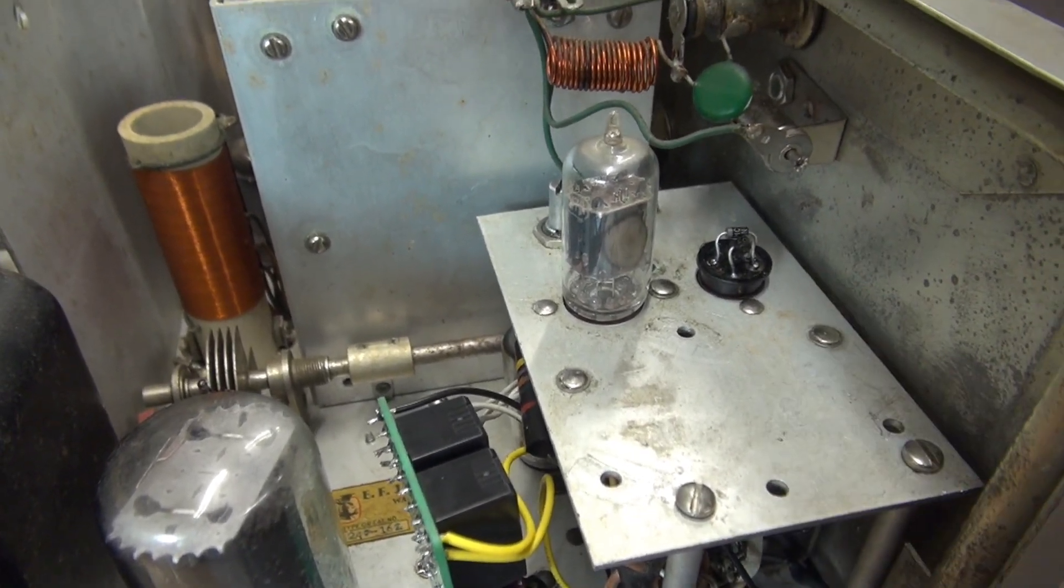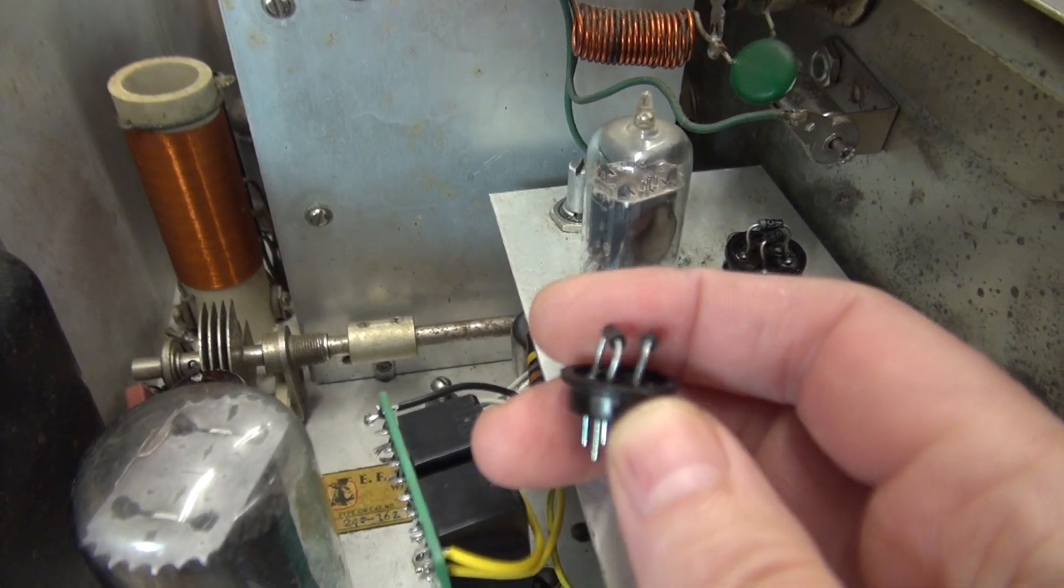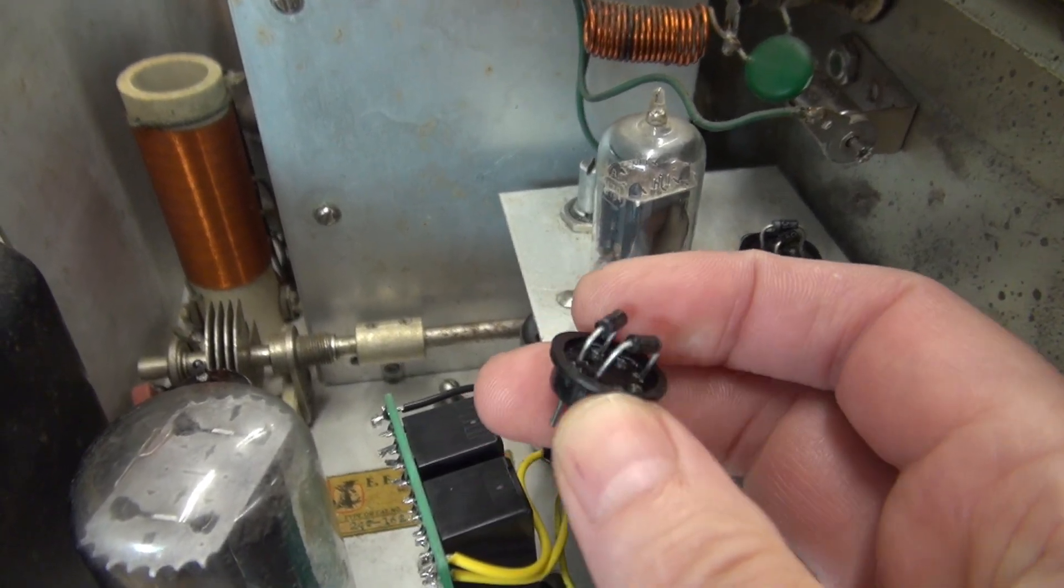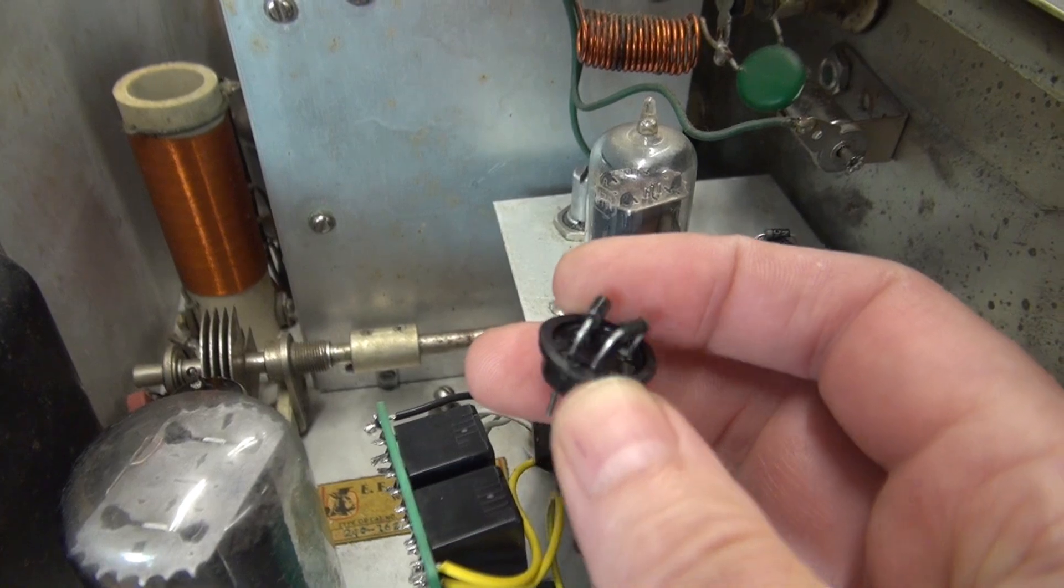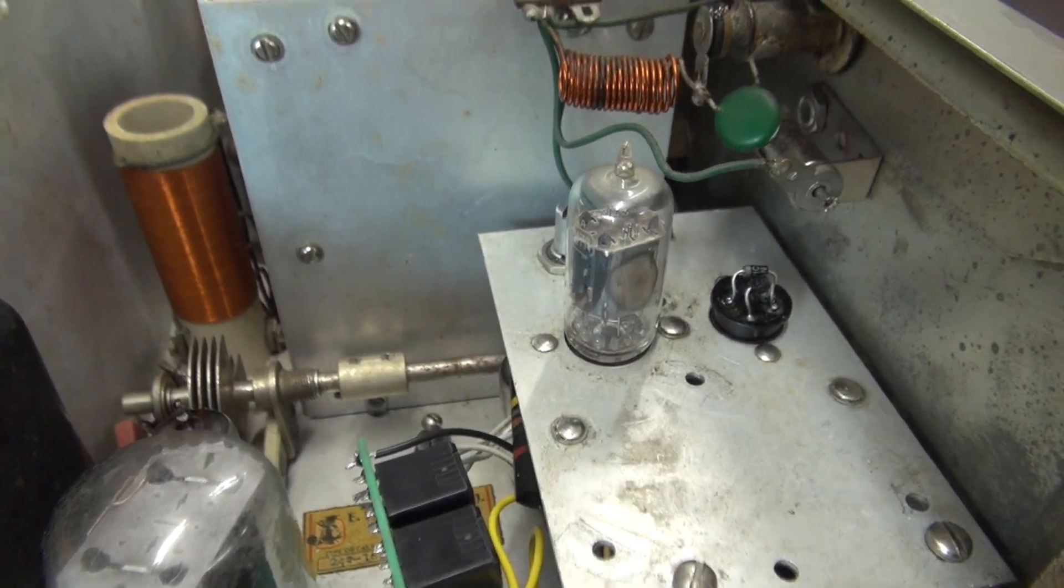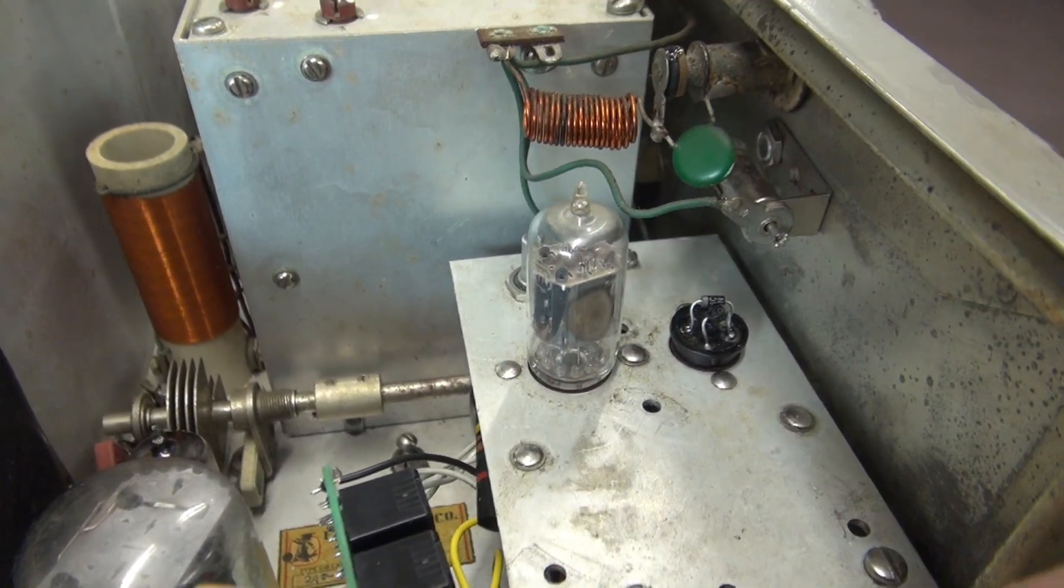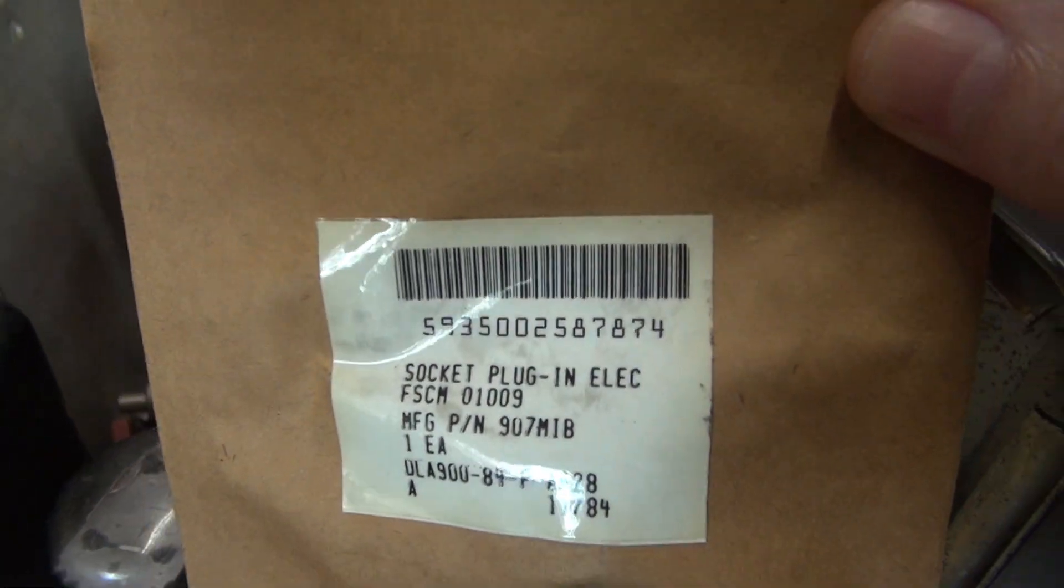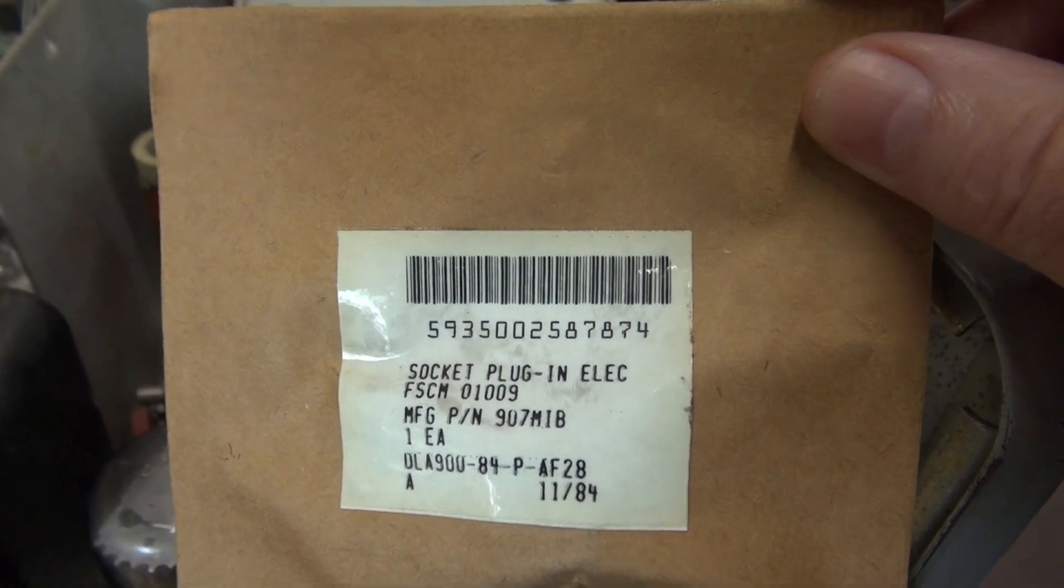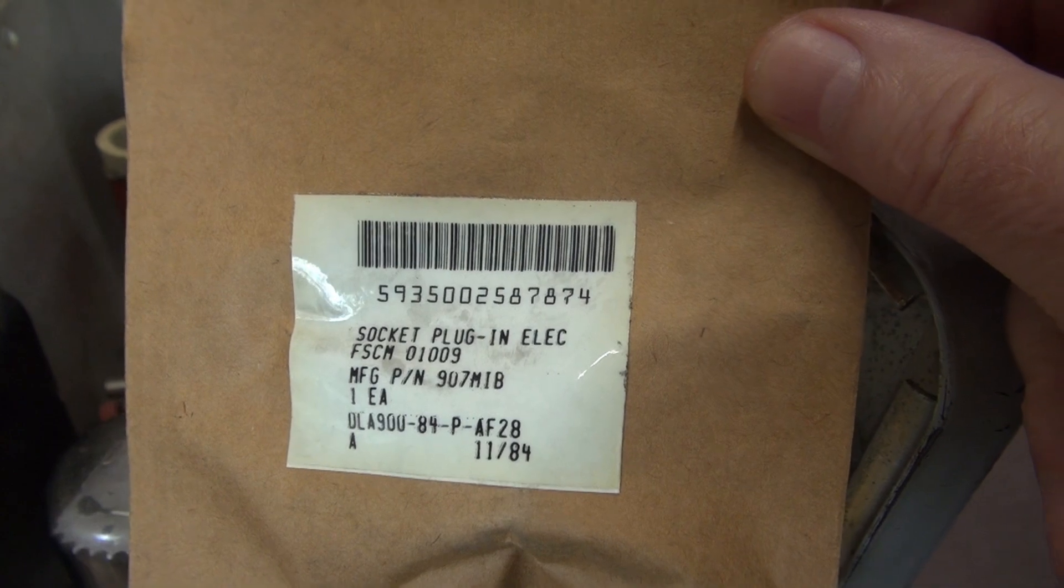You're going to remove that tube and you're going to install this nifty little 7-pin base that has two 1N4007 diodes. You can buy this base through surplus sales in Nebraska. Here is the package that it comes in. This is a part dated 1984.